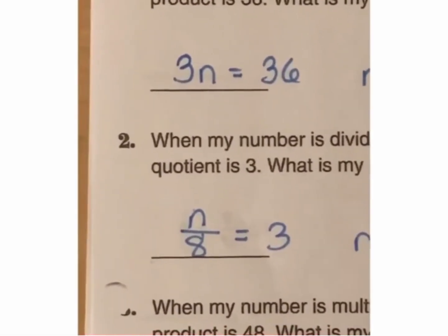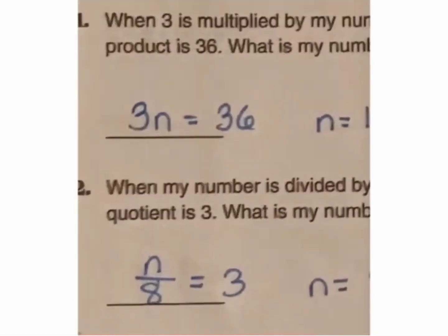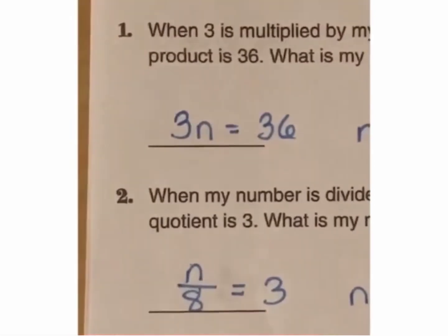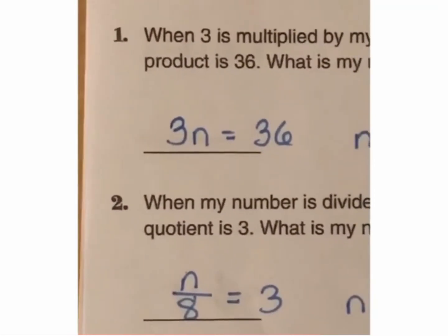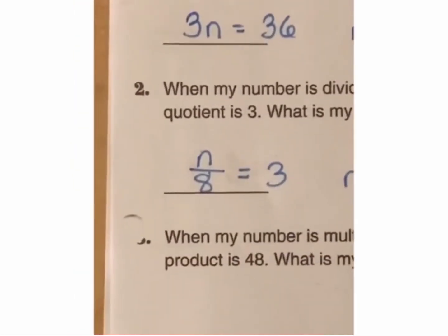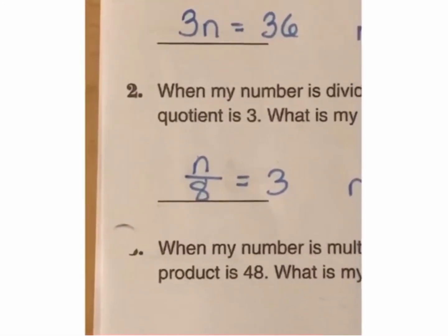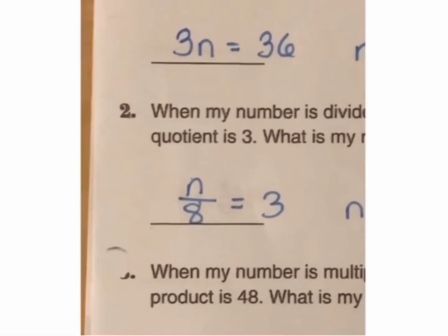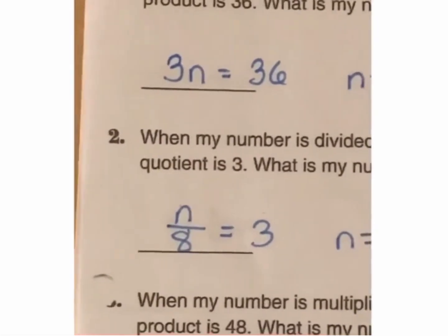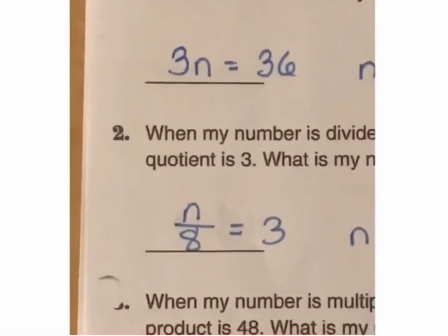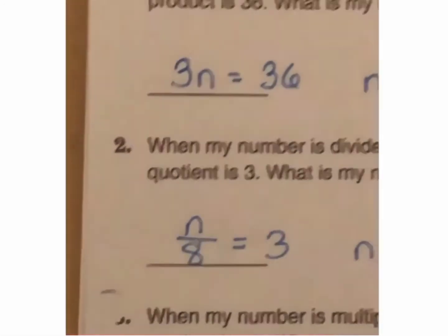When showing multiplication, this is the way I'd like for you to show it. Please don't use the x or the dot or anything. This is the most efficient way for algebra. As well as with division, please use the division bar rather than the division symbol. With algebra, you want things to be as precise and consistent as can be. So, make sure that you use these methods.